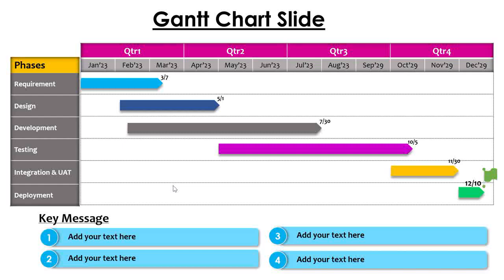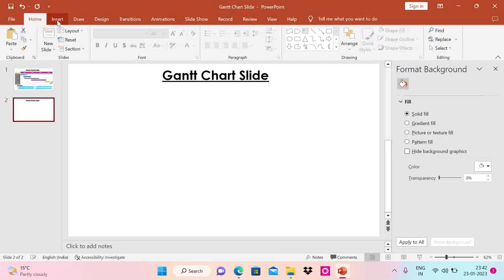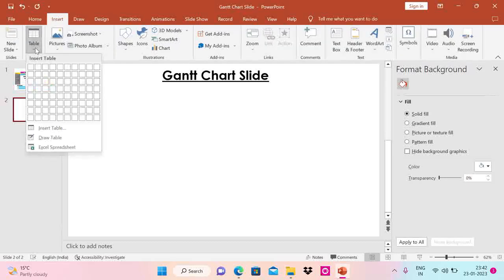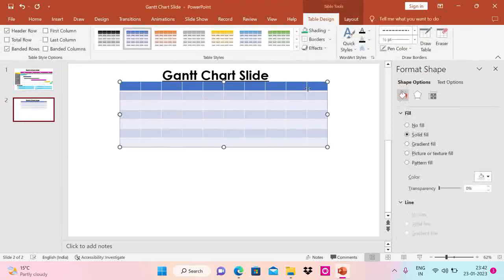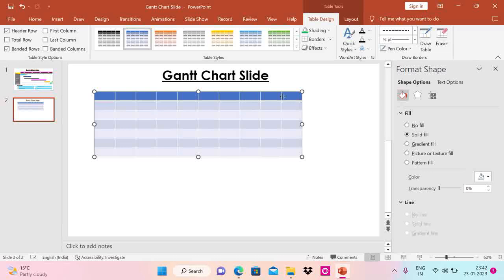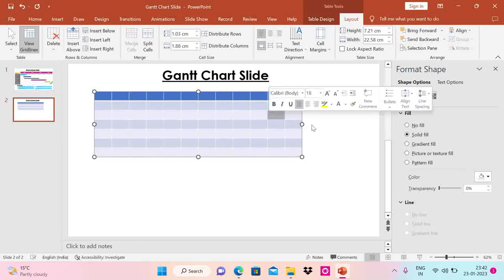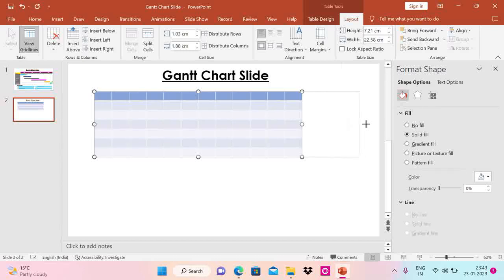I am going to open a blank slide. First thing, I am going to insert a table. I am putting a plan for 12 months so I need at least 12 columns. Let's insert a table and I am going to insert two more columns — go to Layout and say Insert Right. Now we have a total of 12 columns. I am going to stretch it towards the right.